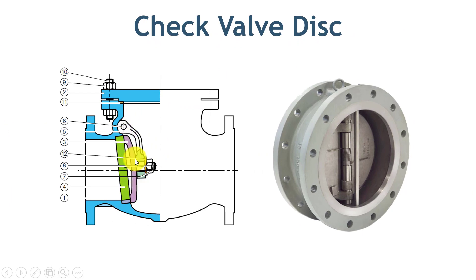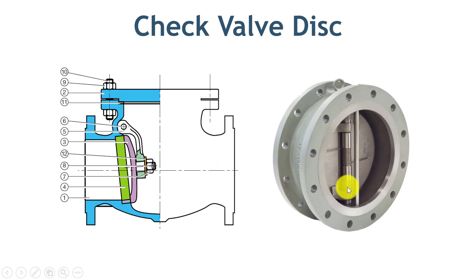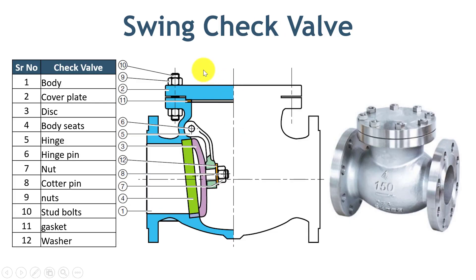The disc in swing type and tilting disc check valves is connected with a hinge and hinge pin, which allows the disc to move freely with forward flow and close when there is not enough forward pressure. A spring in the folding disc and tilting disc check valve helps the valve react quickly and close in the event of pressure loss. There is no stem in the check valve, so you cannot determine the position of the valve from the outside.